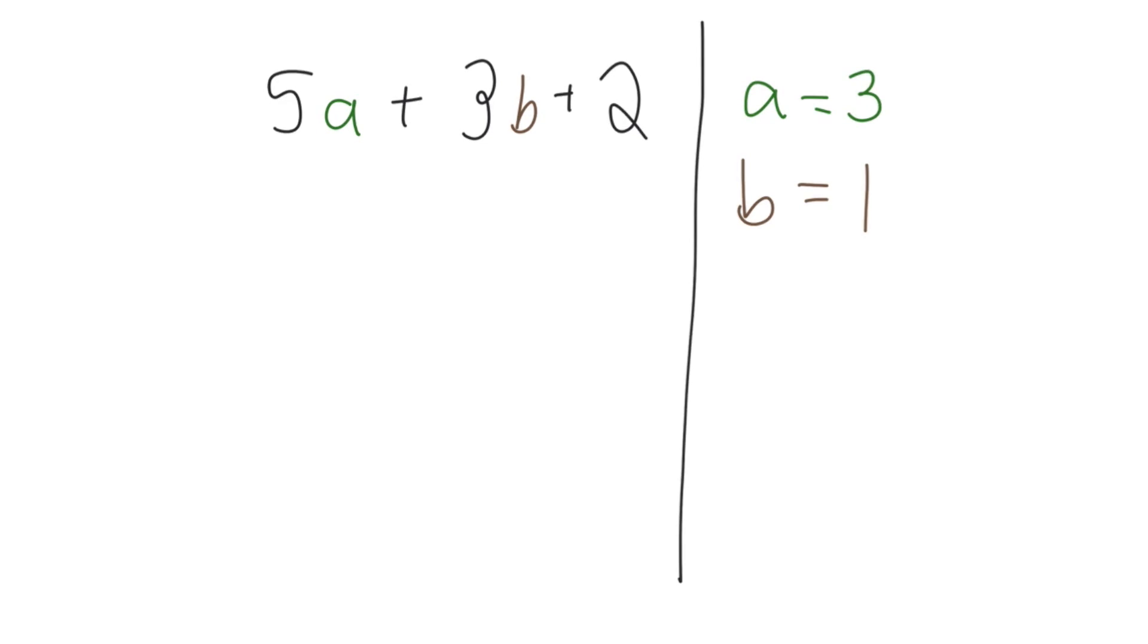You can picture the variables a and b as being placeholders in the equation. We put them there to remind ourselves that here 5 and 3 are each being multiplied with another number.